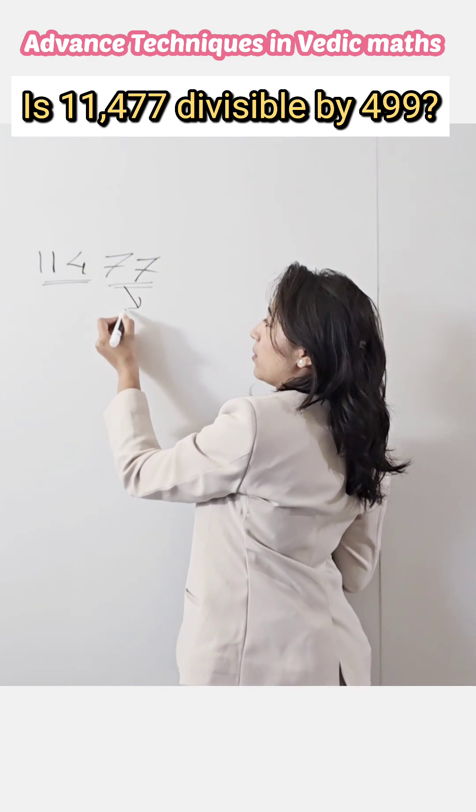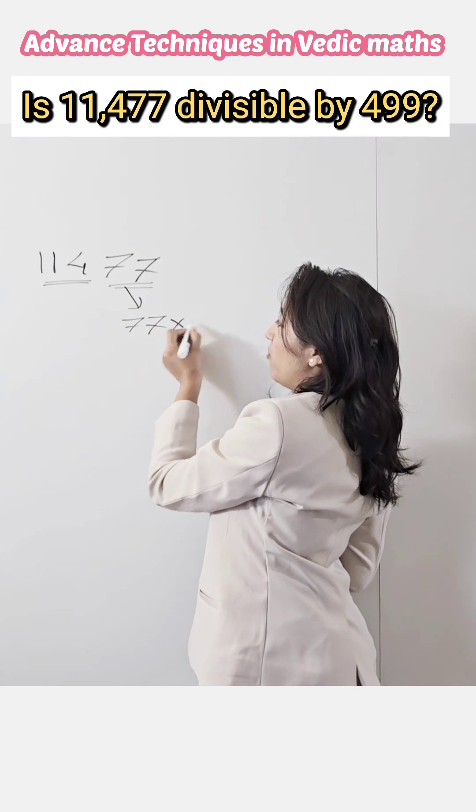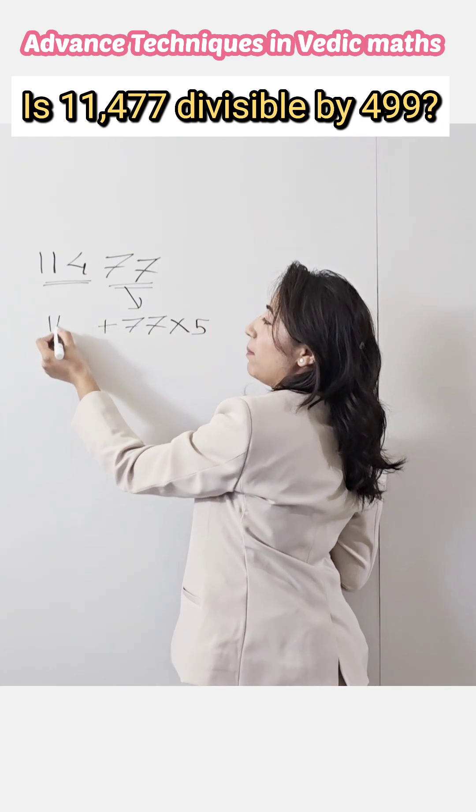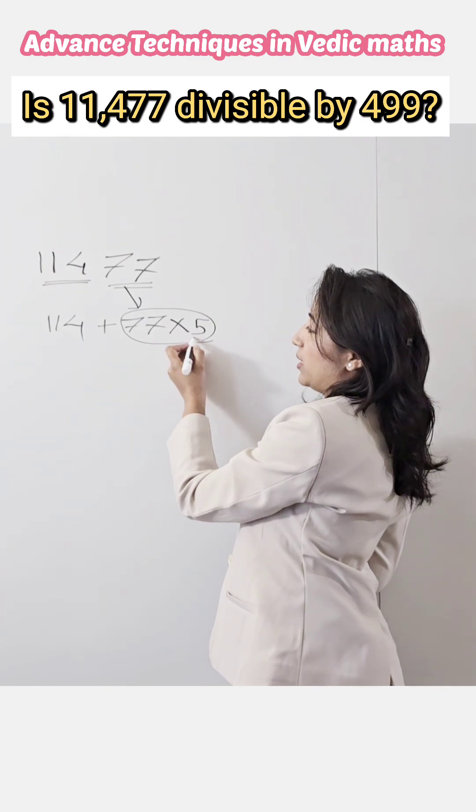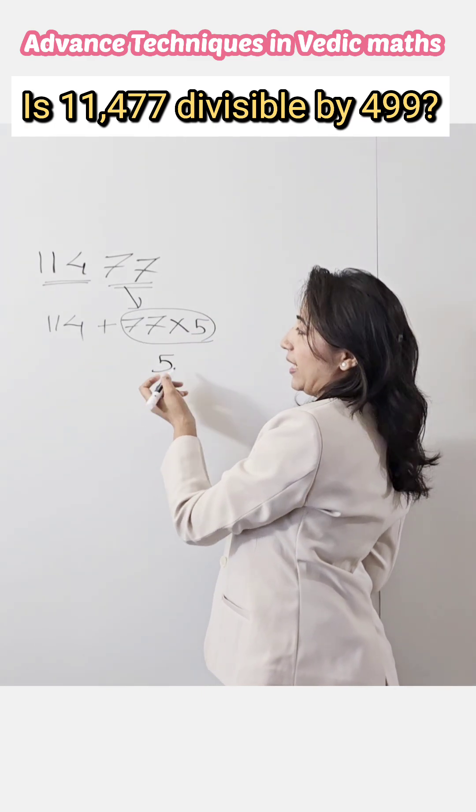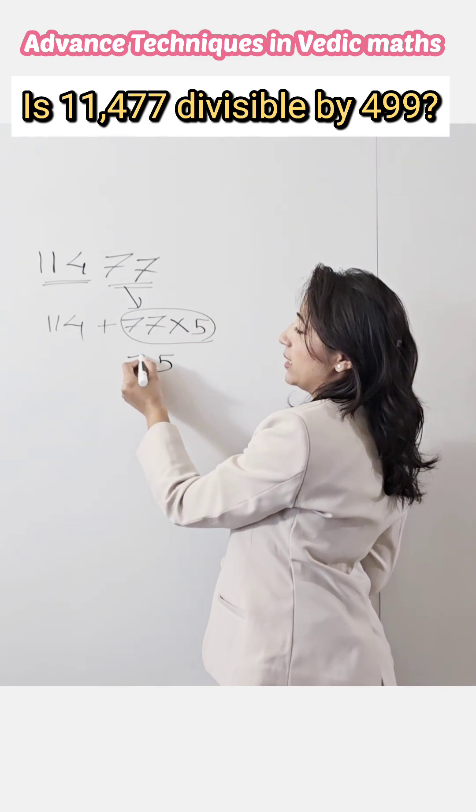Here, last two numbers 77, multiply by 5 and add the remaining part of the number into it. Here, product of 77 and 5: 7 times 5 is 35, carry 3, 7 times 5 is 35 plus 3 is 38.